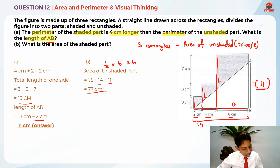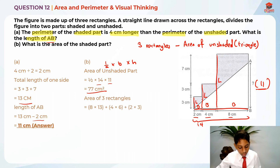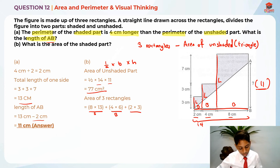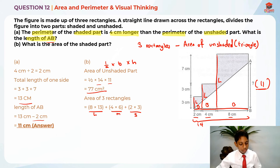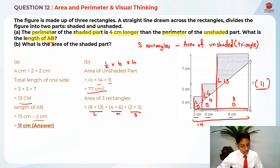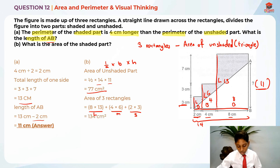We need to find the area of the small, medium, and large rectangles, then add them all together. The large one is 8 cm times 13 cm. The medium one is 4 cm times 6 cm. The small one is 2 cm times 3 cm. Adding all of these together gives us 134 cm² as the total area of the 3 rectangles.